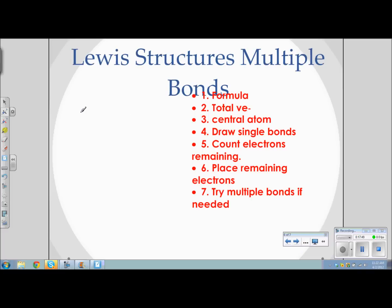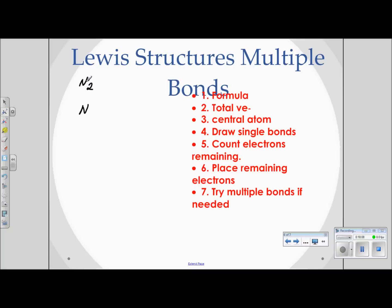There are cases where atoms have to share more than one pair of electrons. Let's look at N2. Nitrogen has five valence electrons, and there are two of them, so we have ten total valence electrons. We draw N–N with a single bond, which accounts for two electrons already placed, leaving eight electrons still to be placed.